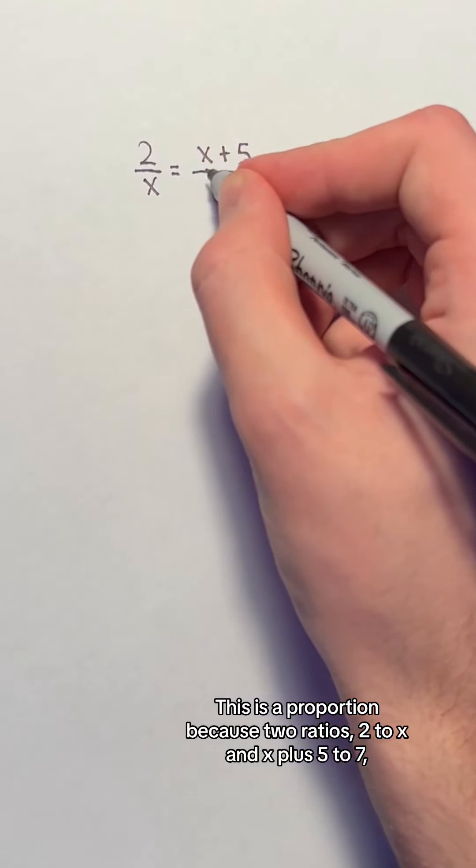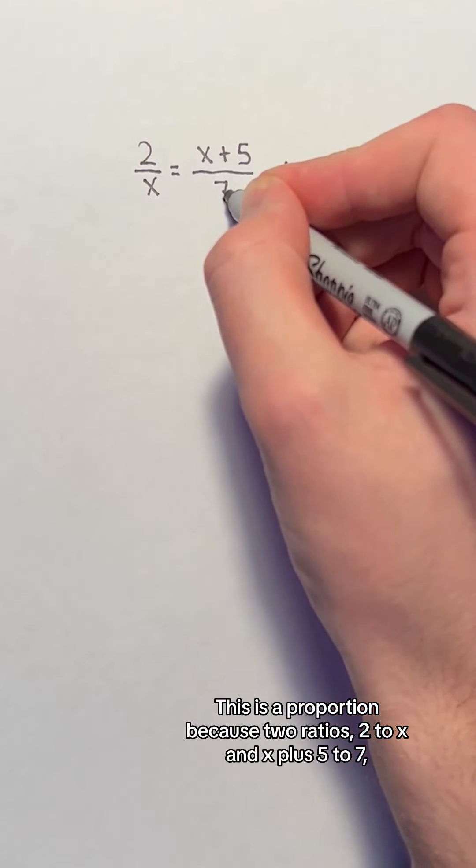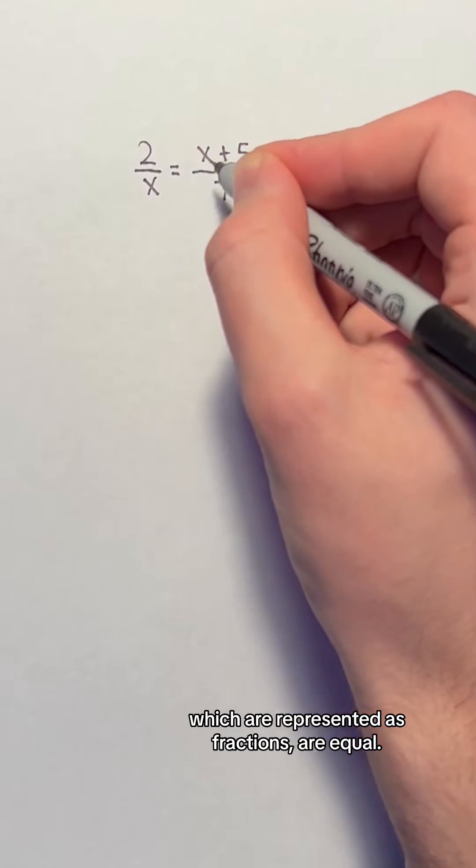This is a proportion because two ratios, 2 to x and x plus 5 to 7, which are represented as fractions, are equal.